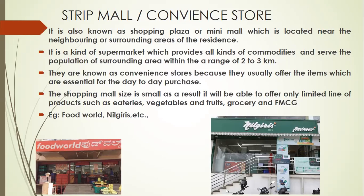It's a kind of supermarket which provides all kinds of commodities and serves the population of the surrounding area. It is not that people travel from more than five or six kilometers to buy the products — only the surrounding area people come. They are known as convenience stores because they usually offer items essential for day-to-day purposes. For example, Food World and Nilgiri's — you will find vegetables, fruits, dairy products, few groceries, packed groceries, and snacks like chocolates, fried items, and other eatables.